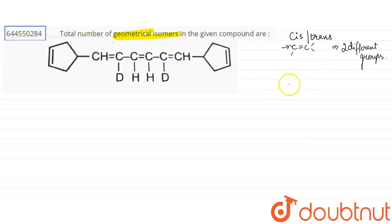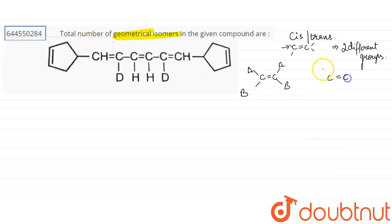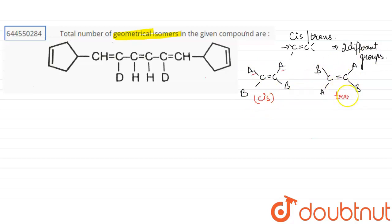To determine which is cis and which is trans: if we have C double bond C with groups A and B, when the same groups are on the same side it is called cis, and when the same groups are on different sides it is called trans.